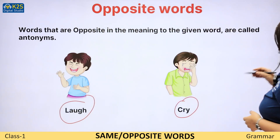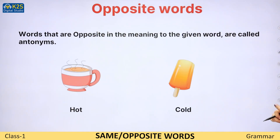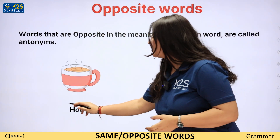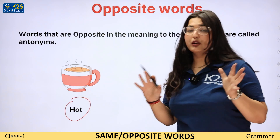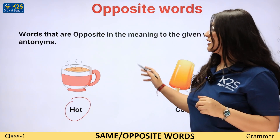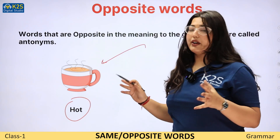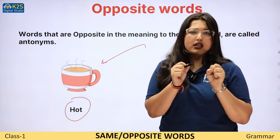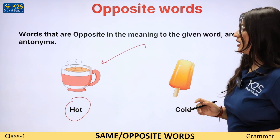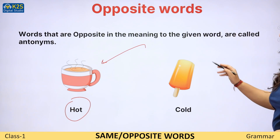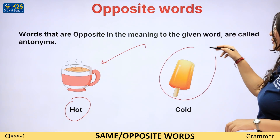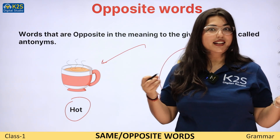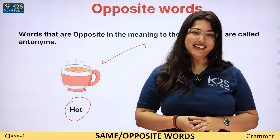Moving to the next section — hot. Ye jo chai hai, which is very hot, poori zyada garam. And cold — aapki jo ice cream, kaafi zyada thandi hoti hai. So hot and cold are opposites.